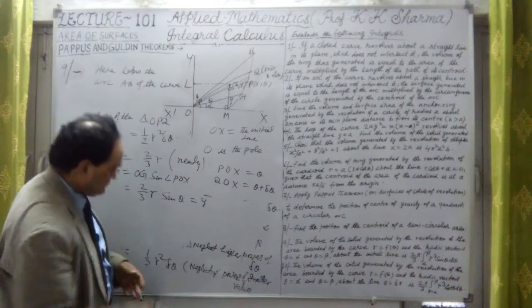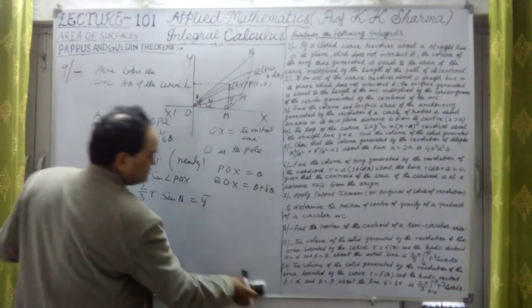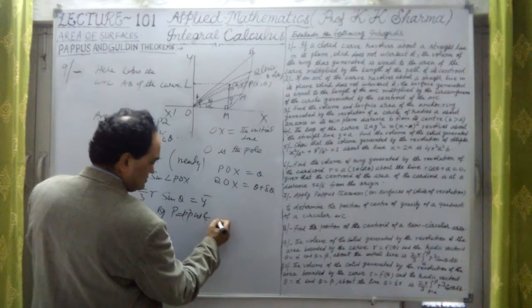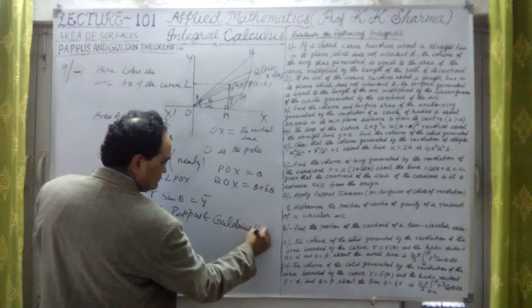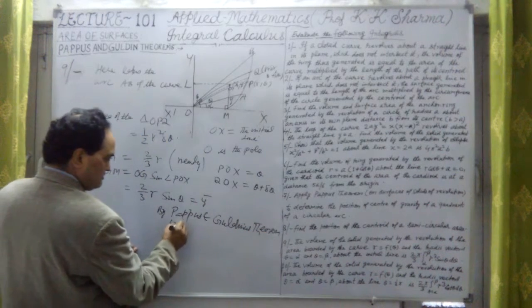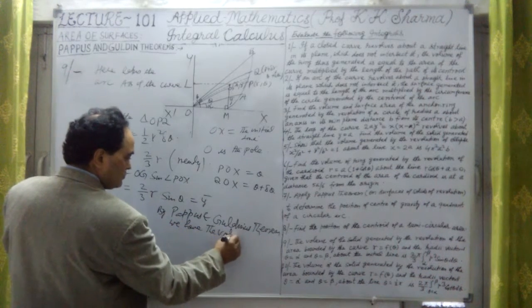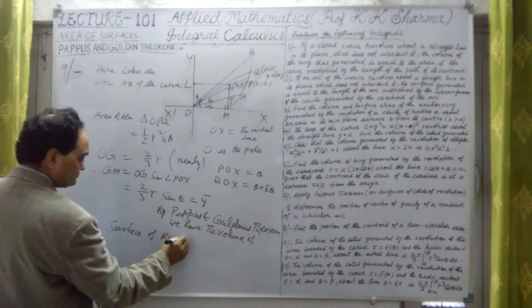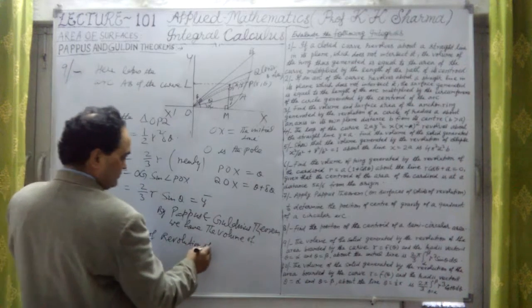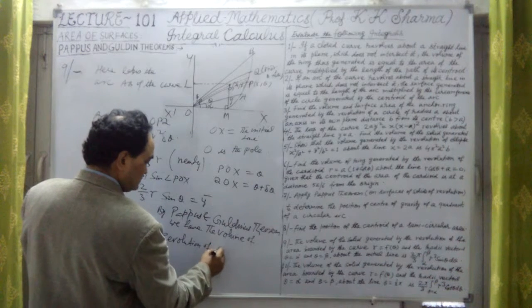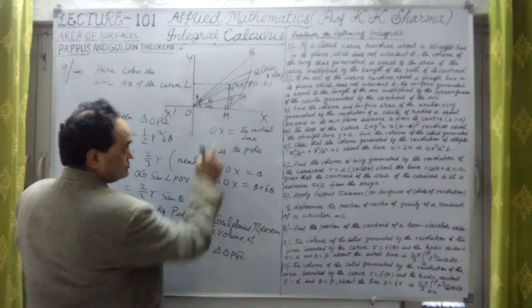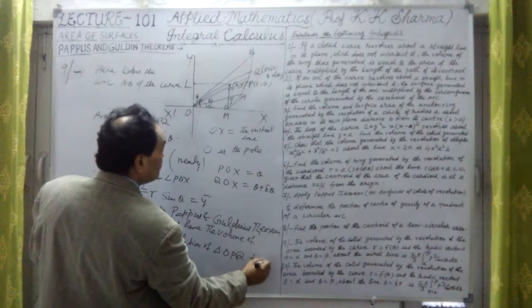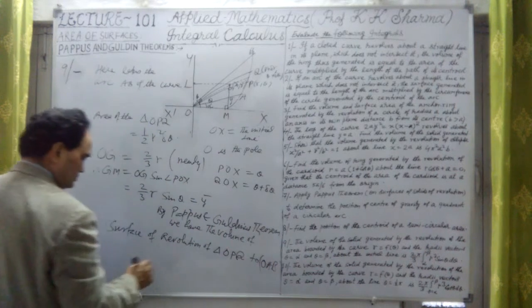This will now be applied using Pappus and Guldinus theorem. Therefore, by Pappus and Guldinus theorem, the volume of the solid of revolution of triangle OPQ, extending from OAB, equals the area of the field OAB multiplied by the circumference generated by the centroid.